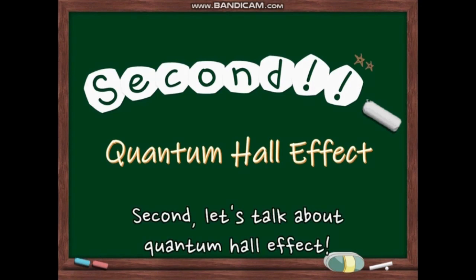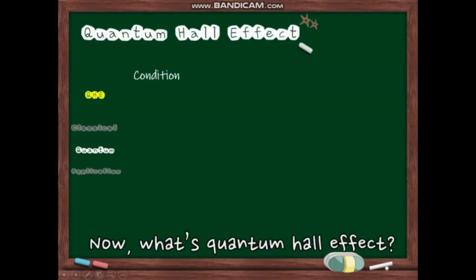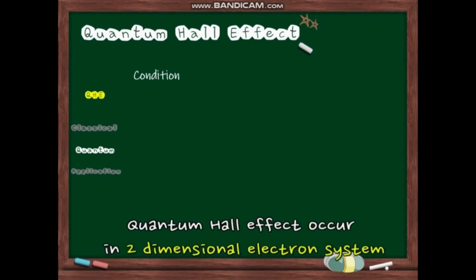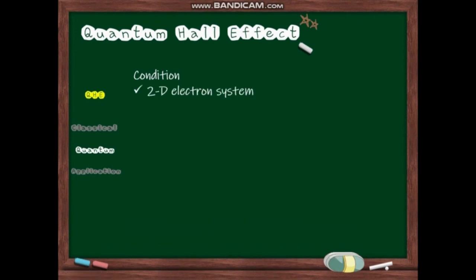Second, let's talk about quantum Hall effect. Now, what's quantum Hall effect? Quantum Hall effect occurs in two-dimensional electron systems at low temperature and strong magnetic field.